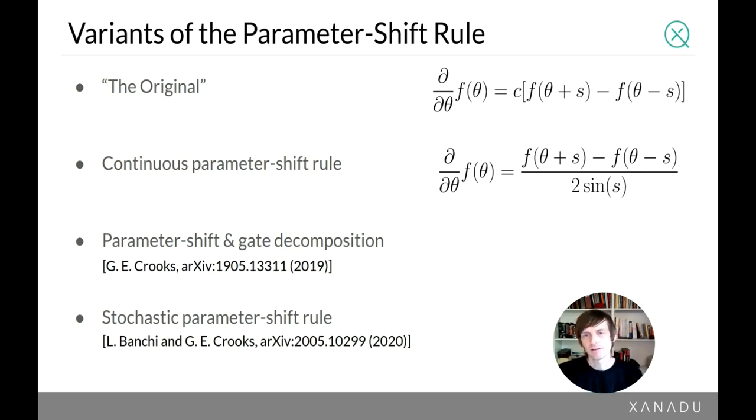In the case where you have gates that can't admit a parameter shift rule, what you can do is you can decompose those gates into individual gates which give the same transformation. But those individual gates either don't have any parameters associated with them or they have known parameter shift rules. So you can always decompose gates. And there's more recently proposed a stochastic parameter shift rule which has the promise of differentiating arbitrary gates.